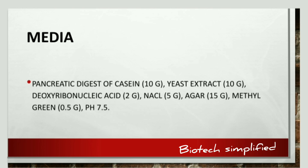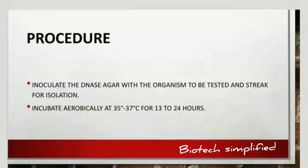To summarize, the media consists of pancreatic digest of casein, yeast extract, deoxyribonucleic acid, NaCl, agar, and methyl green. Now let us discuss the procedure. The first step is to inoculate the DNase agar with the organism to be tested and streak for isolation. The next step is incubation — aerobically at 35 to 37 degrees Celsius for 18 to 24 hours.